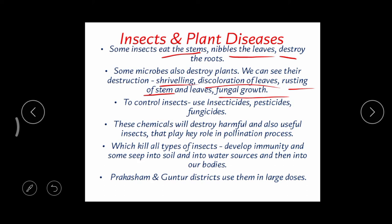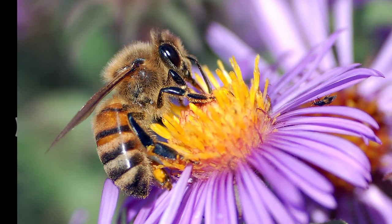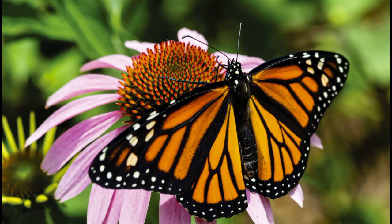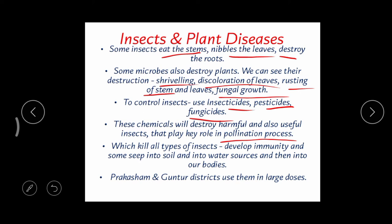To control insects, pests, and microbes, we use chemicals: insecticides to kill insects, pesticides to kill pests, fungicides to kill fungi, and herbicides to control weeds. But these chemicals destroy all insects — whether harmful or useful. Important insects like honeybees and butterflies play a vital role in pollination. When insecticides kill them too, the pollination process is affected, leading to a reduction in crop yield.